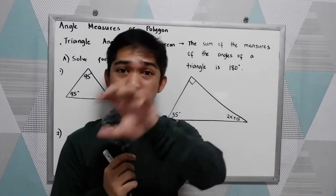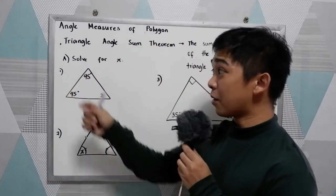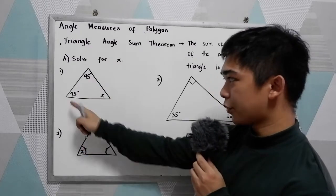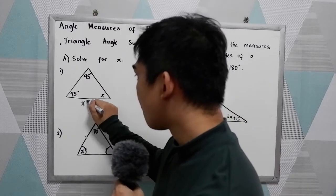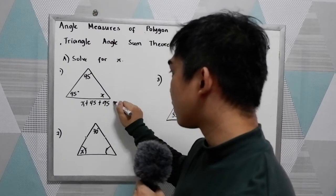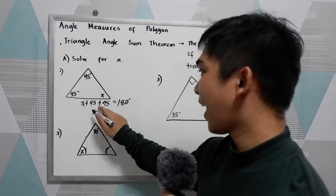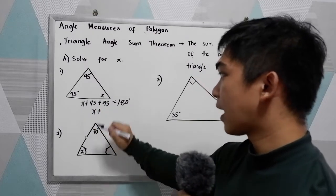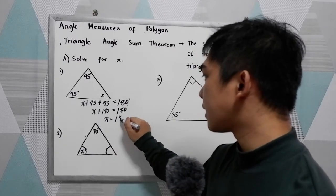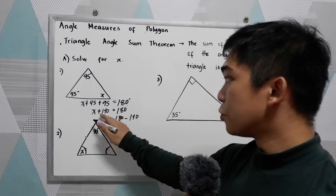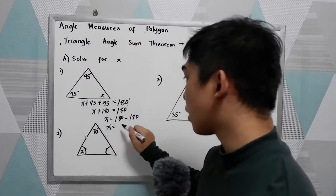So if we're going to add the sum of all the angles of a triangle, that is equal to 180 degrees. Now let's have problem number one: solve for x. We have 95 and 45, and we're going to find x. We know that x plus 45 plus 95 is equal to 180 degrees. Now, 45 plus 95 is 140, so x is equal to 180 minus 140, which gives us x is equal to 40 degrees.